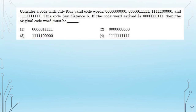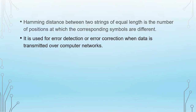Those three questions were from Theory of Computation (TOC). Now comes a Data Communications and Networks (DCN) question on Hamming distance, error correcting, and error detecting codes. Consider a code with four valid code words. The code has a distance of 5. If the received code word is given, what is the original code word? Hamming distance is checked between two strings of equal length — it is the number of positions at which the corresponding symbols are different. It is used for error detection and error correction when data is transmitted over a network.